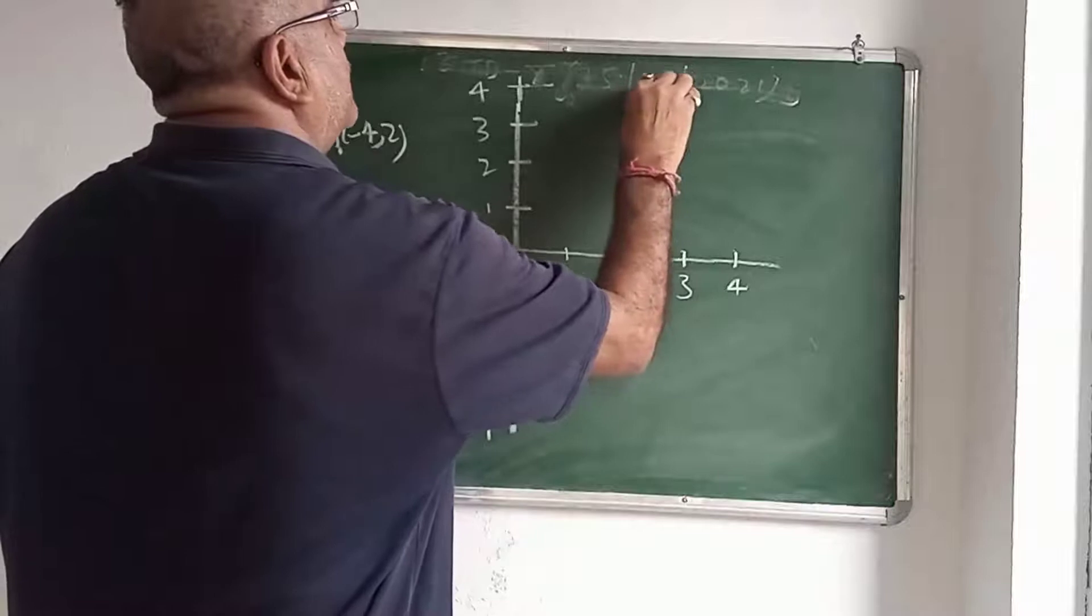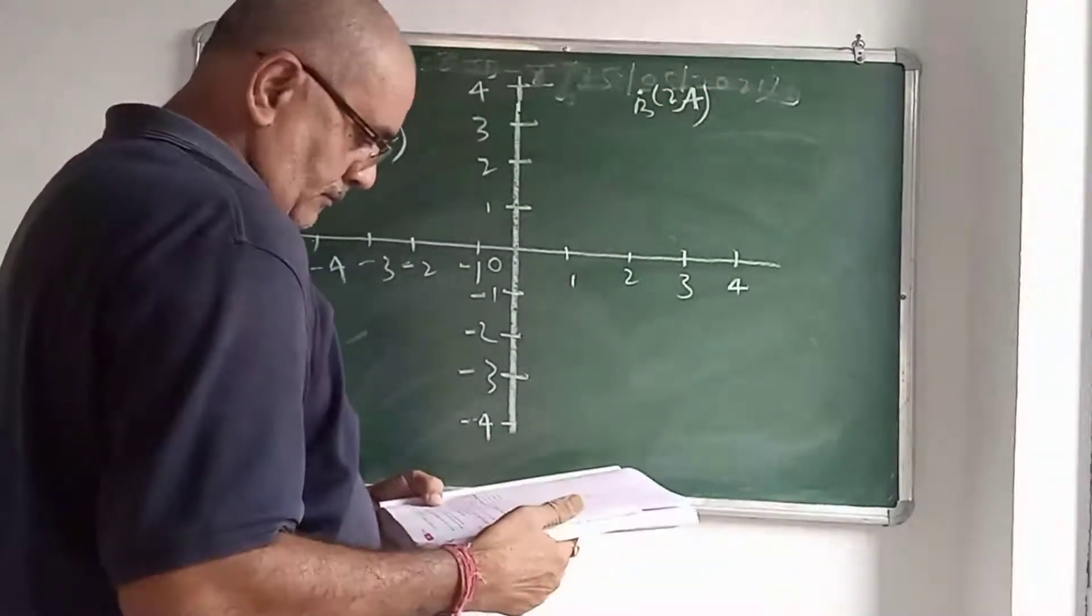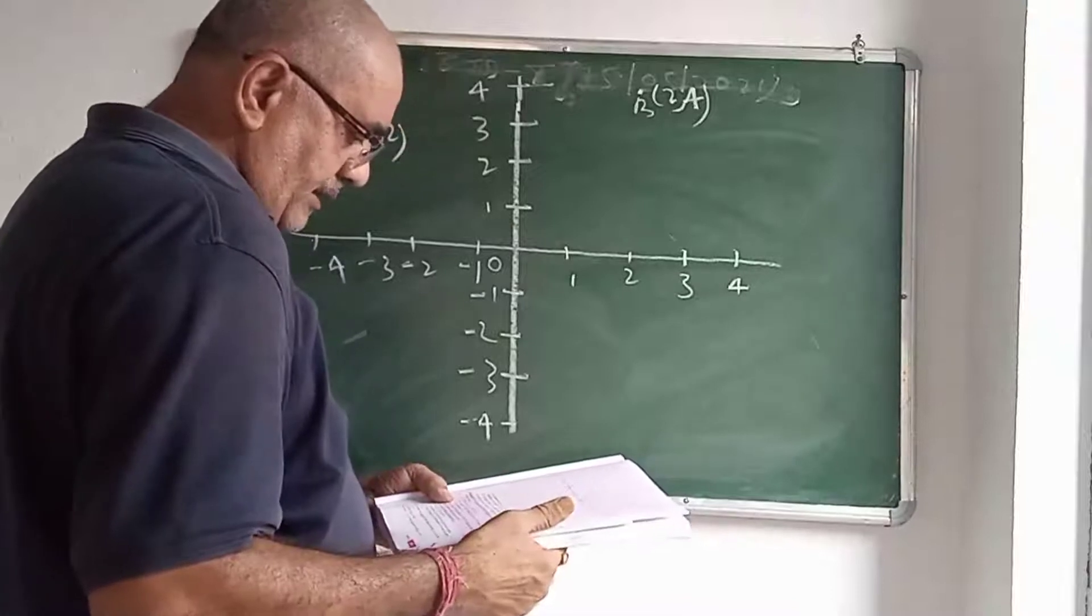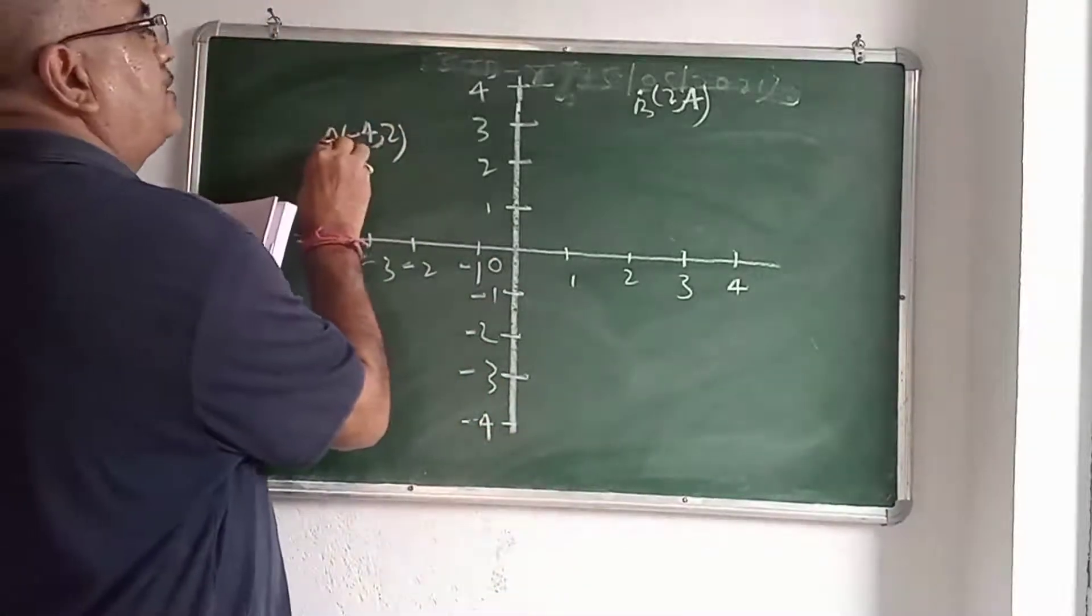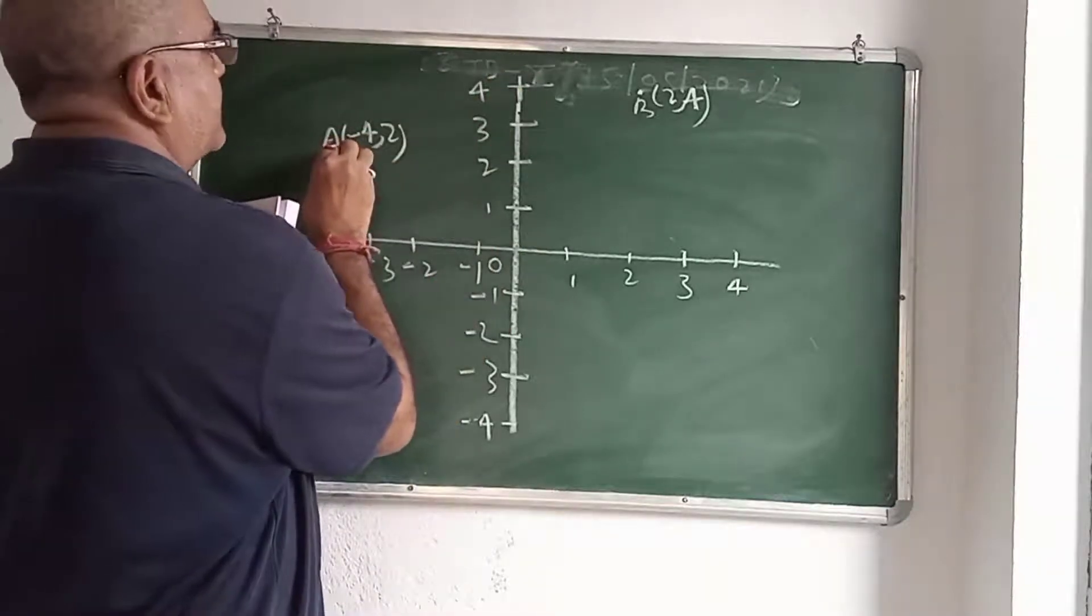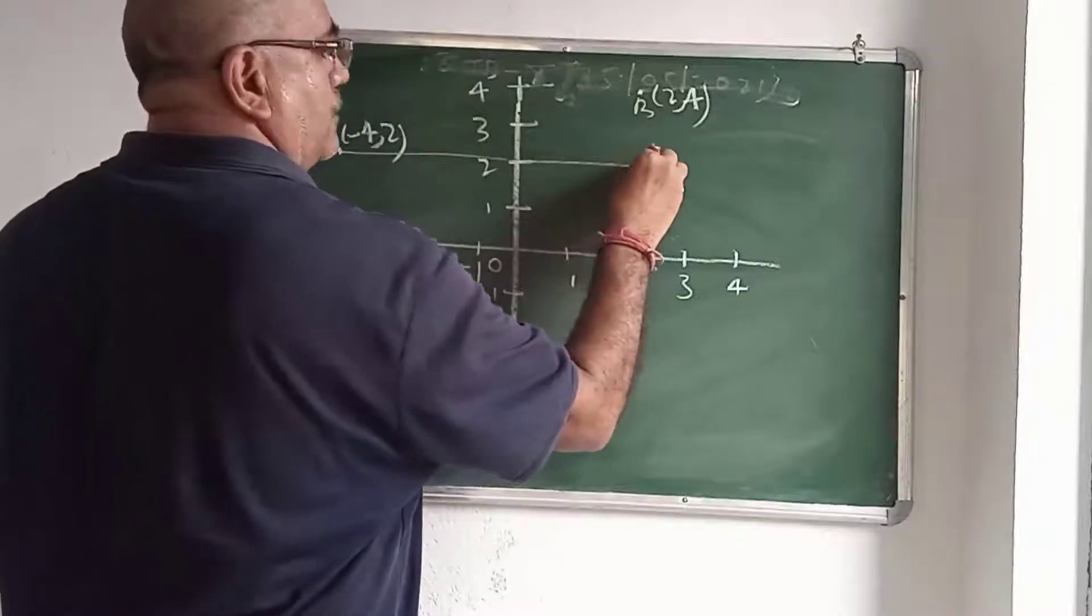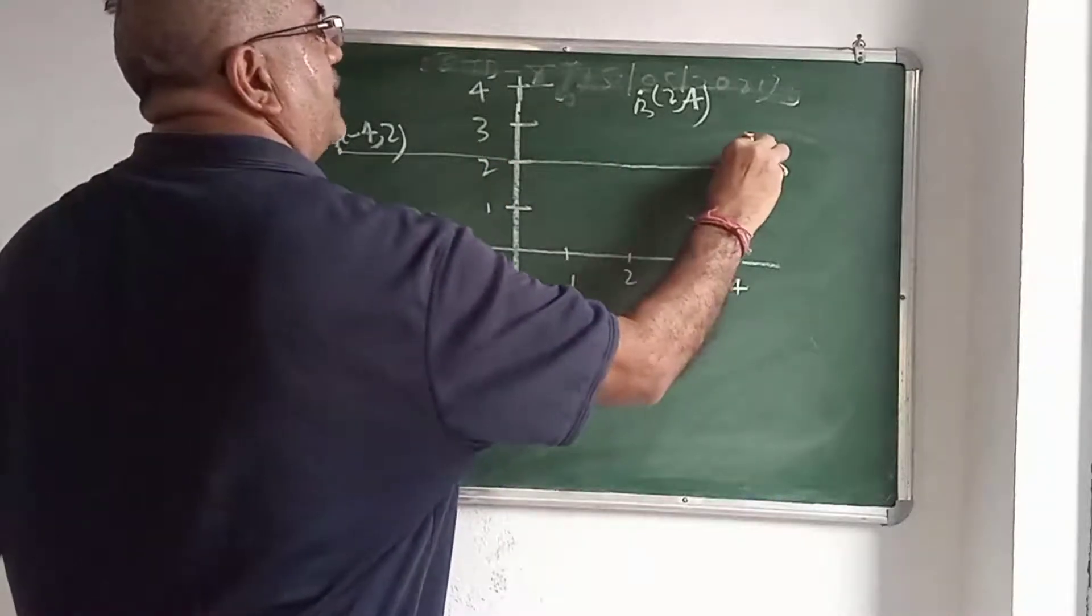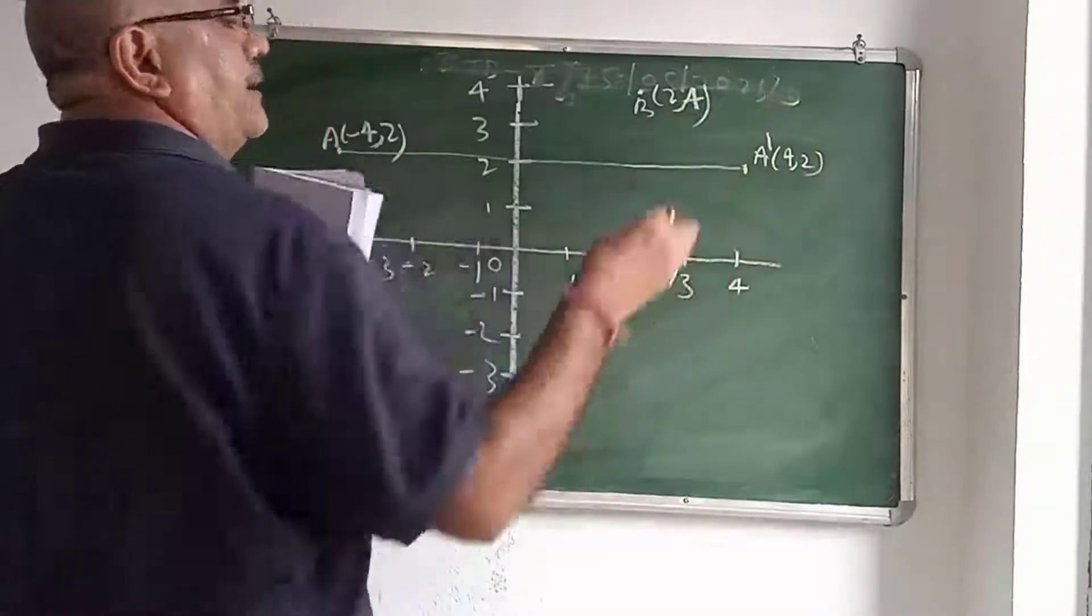A dash is the image of A when reflected in y-axis. On this point this is the y-axis. So reflected in y-axis here. This is A dash. Coordinate will be 4, 2. A dash.